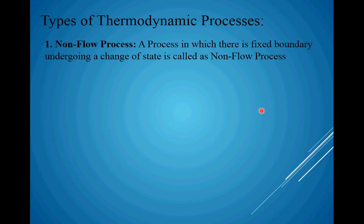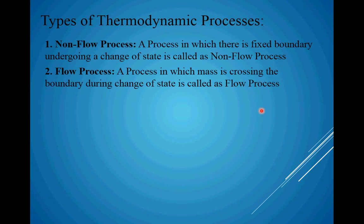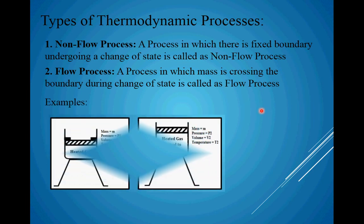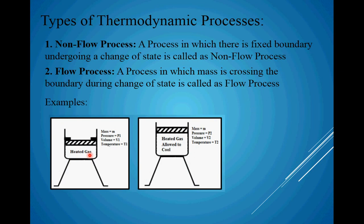There are various types of thermodynamic processes. The first one is the non-flow process. A process in which there is a fixed boundary undergoing a change of state is called a non-flow process. In our example, we have a container and a piston — a fixed boundary — meaning mass is not crossing the boundary; it is not allowed to leave the system and no new mass is added. There is a fixed boundary and there is a change of state because certain property values are changing, so this is an example of a non-flow process.